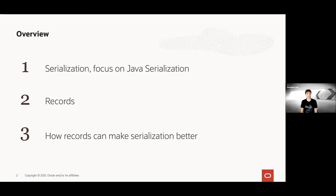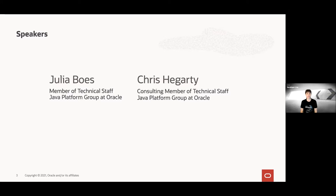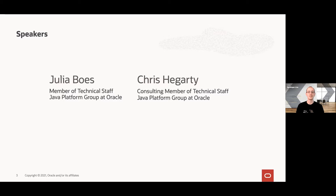My name is Julia Boes. I work on the OpenJDK as part of the Java platform group at Oracle. I joined in 2019 and have been working on record serialization for the last few months. I'm Chris Hegarty. I work in the Java platform group at Oracle. I've been working on Java platforms since I joined Sun Microsystems back in the year 2000, in the areas of networking, core libraries, and serialization.